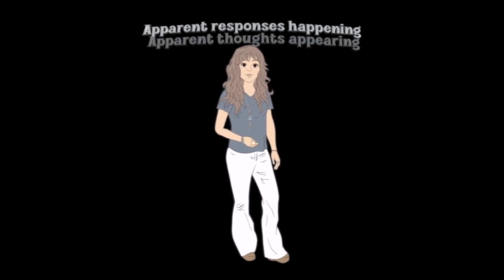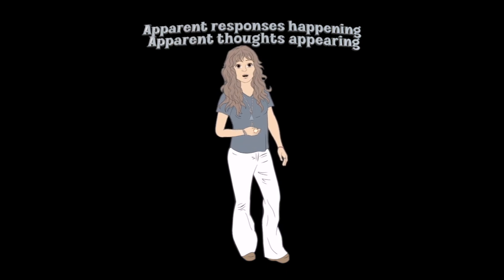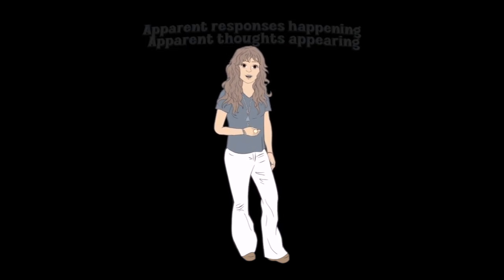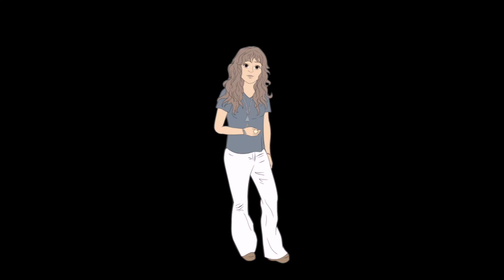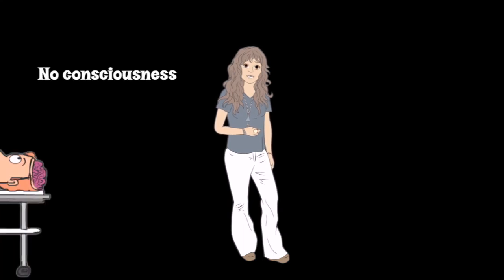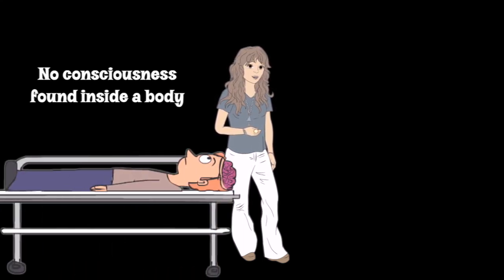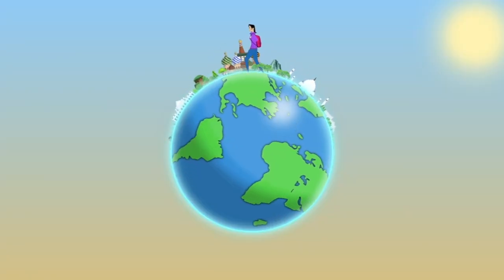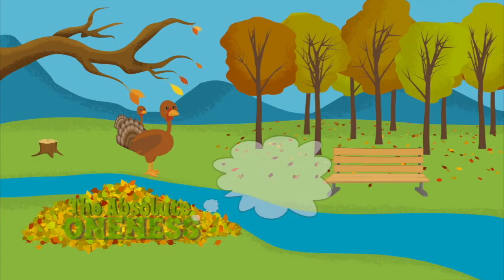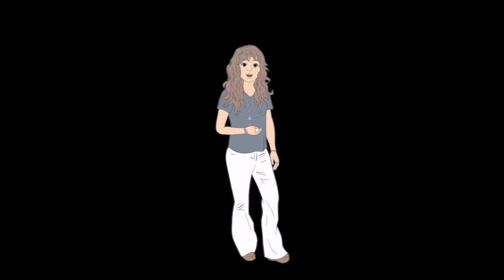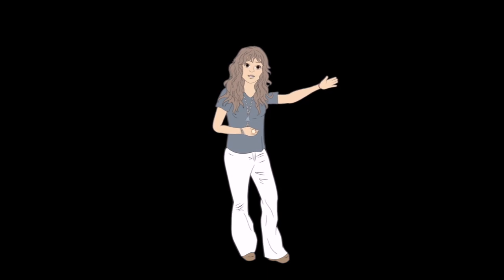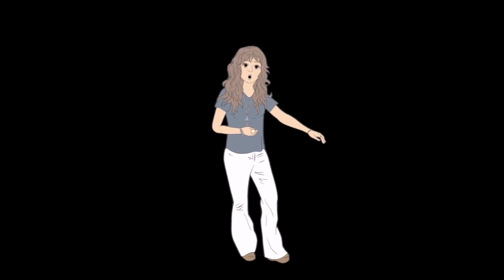Apparent responses happening, apparent thoughts. Appearing thoughts create the sense of a conscious knower who lives inside. No consciousness is found inside the appearance of a body. No consciousness bubble to be found anywhere on the planet. No consciousness is found hiding anywhere and living as the absolute. There is just this immediate appearance. There is no you who needs to come to believe there is no you. That task is impossible.